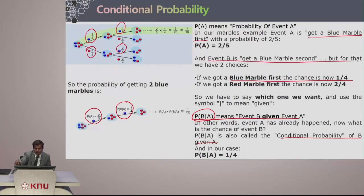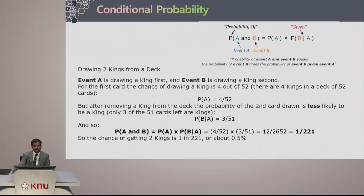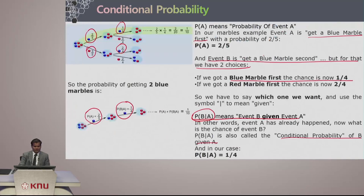So probability of event B — we want to check that out. This is the basis for conditional probability: given a condition, what are the chances for another event. Probability of A and B equals probability of A times probability of B given A.